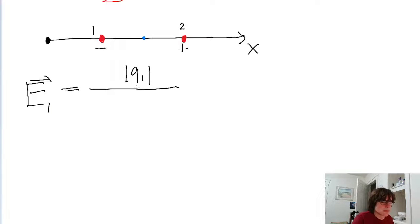Divided by 4 pi epsilon naught from the Coulomb constant, multiplied by the square of the distance between the point we're analyzing and the point charge. So I'm going to use x to represent the position of the midpoint, x sub 2 to represent the position of charge 2, and x sub 1 to represent the position of charge 1. So the difference then is going to be equal to x minus x1. And don't forget that the thing in parentheses is being squared as per the inverse square law.